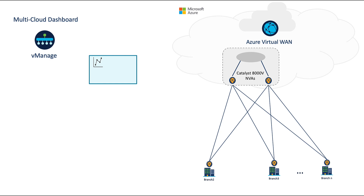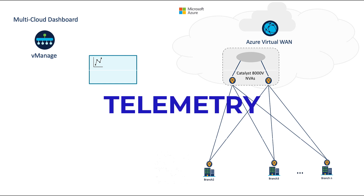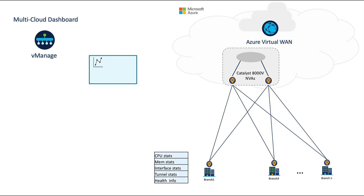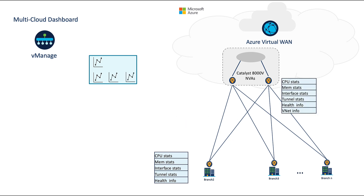Our multi-cloud dashboard and telemetry facilitate day-one operations and troubleshooting. Our routers continuously send health information to VManage. This includes CPU, memory, interface, and tunnel stats, as well as general device health. This includes all hardware branch routers, as well as our cloud gateways, which also send information about their connected VNets. This data can then be aggregated and further analyzed to assist with baselining, trend analysis, and troubleshooting.